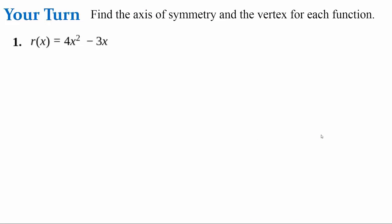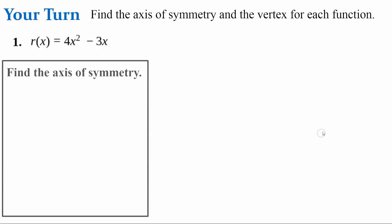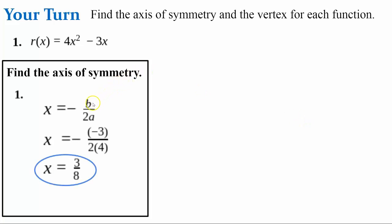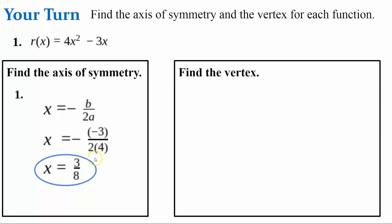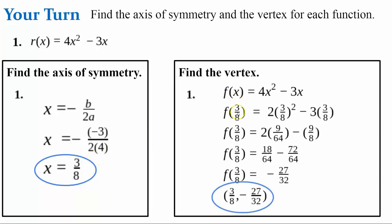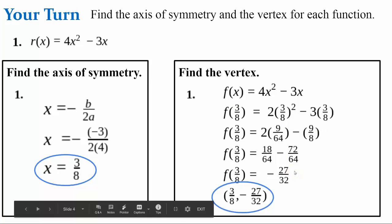Pause the video and find the axis of symmetry and the vertex for each function, then come back to check your answers. For function r, we evaluate using the formula negative b divided by 2a. b has a value of negative 3 and a has a value of 4. Plugging in and evaluating, the axis of symmetry is the line x equals 3/8. To find the vertex, we evaluate the function at x = 3/8, square 3/8, multiply, get a common denominator, and subtract. The vertex is (3/8, -27/32).